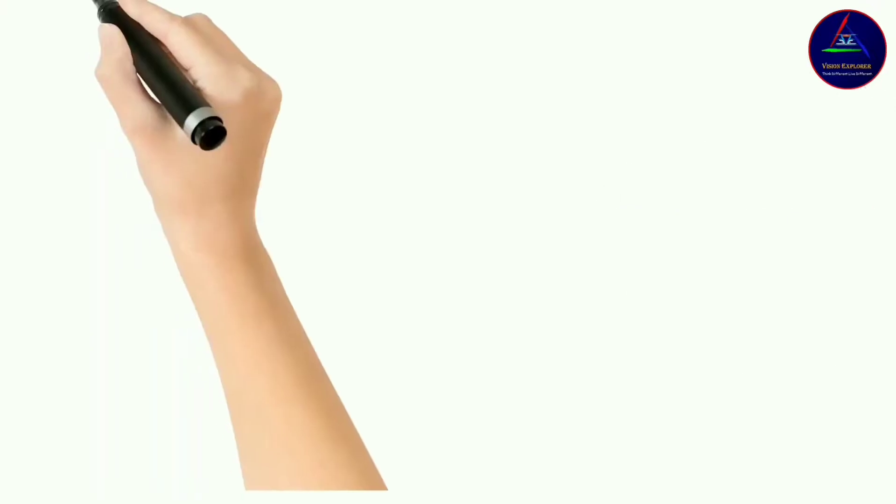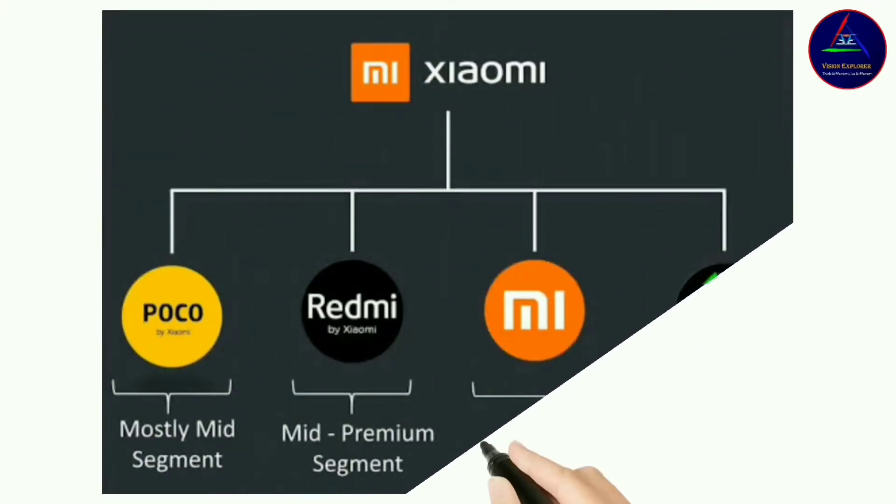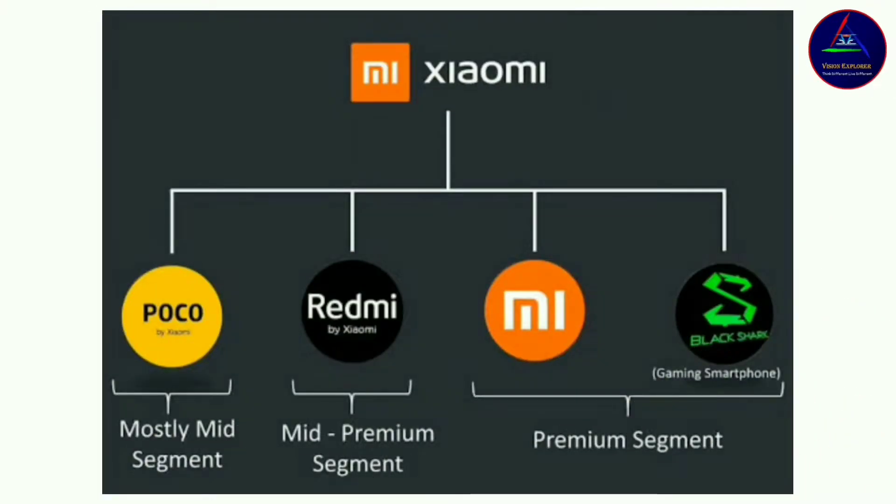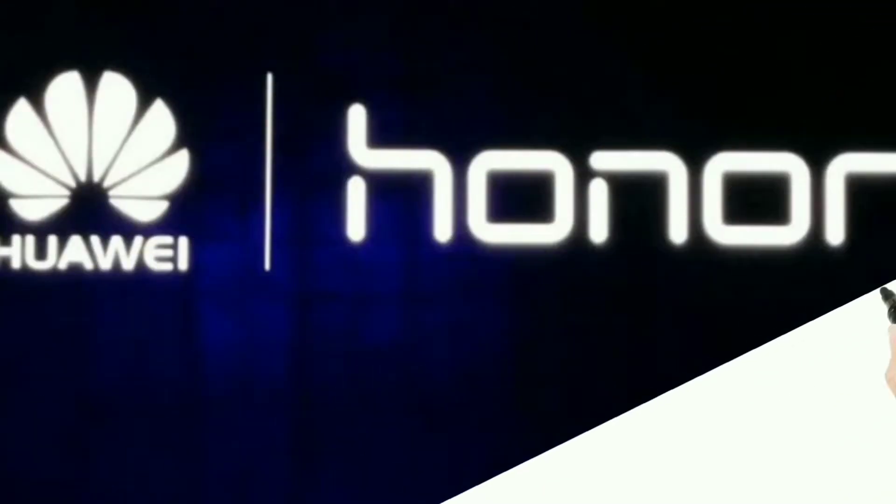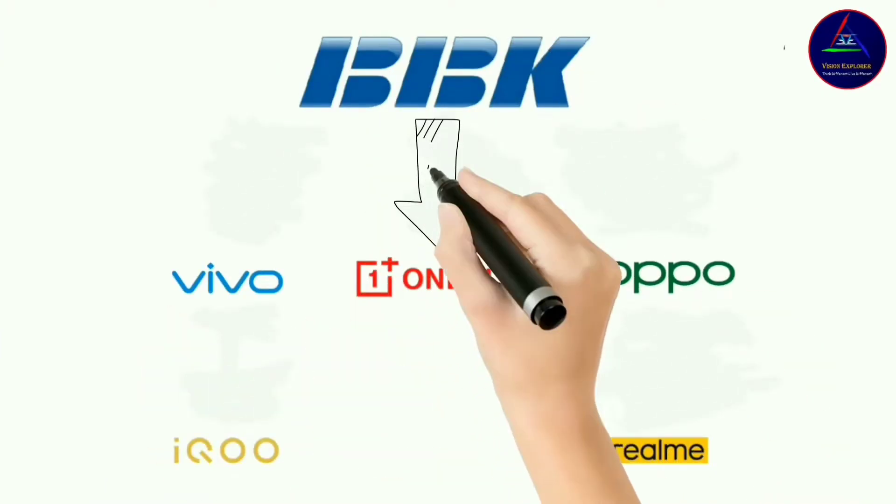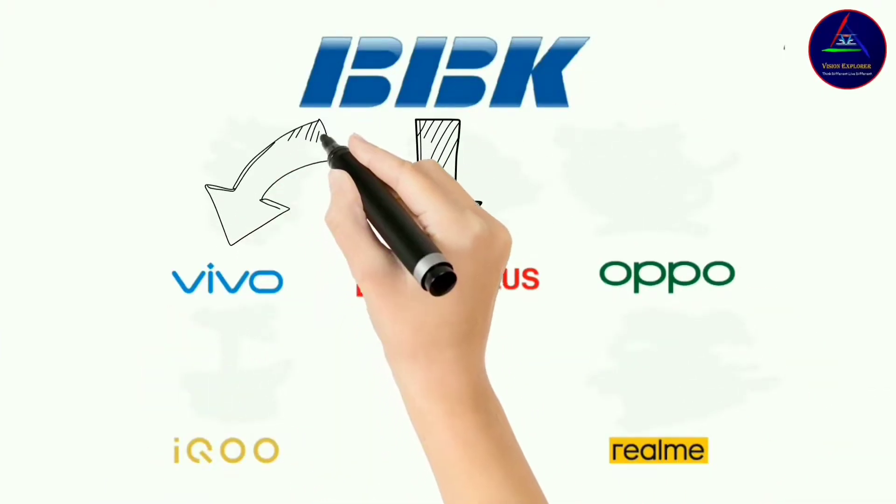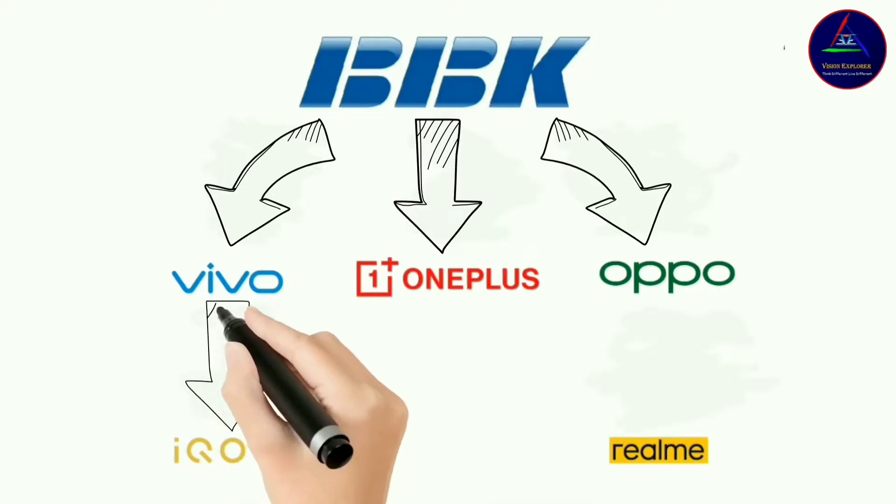In present, Xiaomi is a parent company and it has subbrands as Mi, Redmi, Poco, and Black Shark. Huawei have Honor, and BBK have Vivo, OnePlus, and Oppo. And again, Vivo have iQOO and Oppo have Realme as subbrands. But why are they all following the same hierarchy of subbrands?